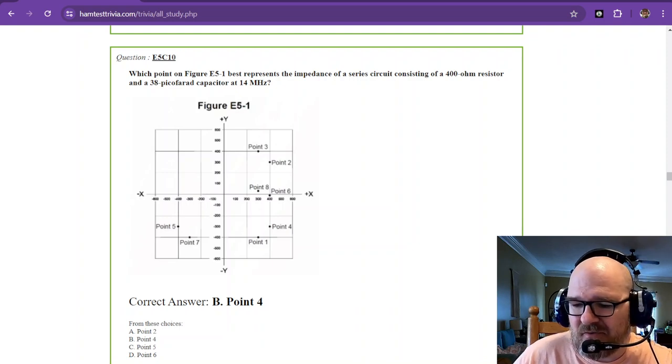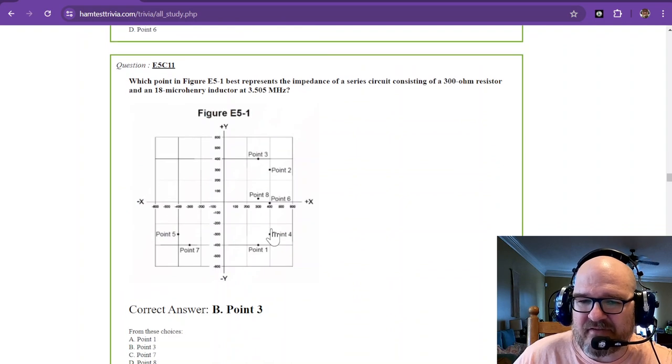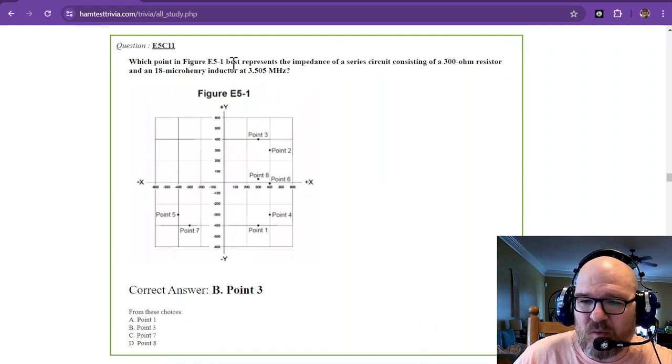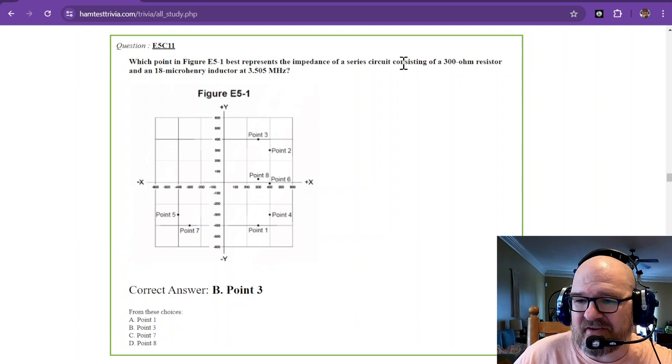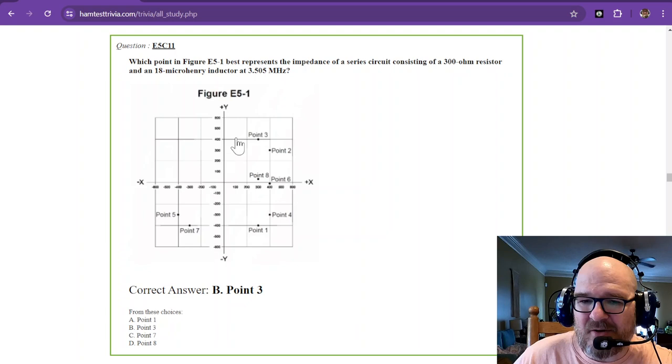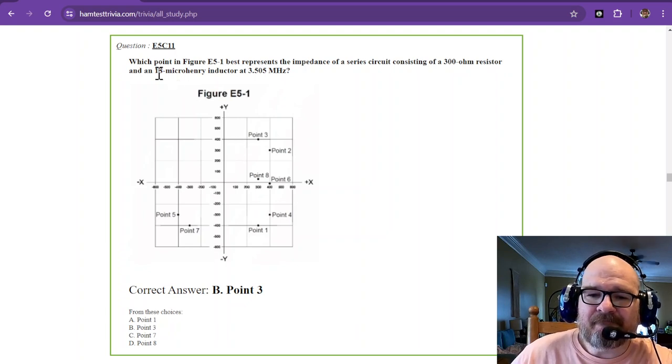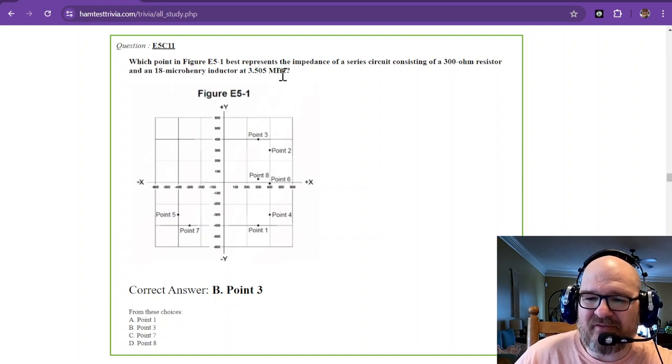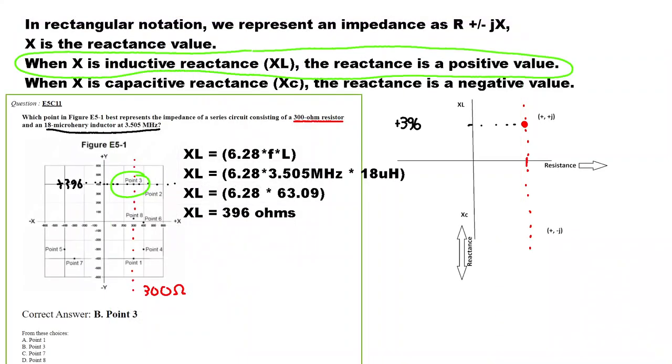All righty. Let's go to number 11. I'm going to read it first. Then I'll put the answer solution on the screen. Which point in figure E5-1 best represents the impedance of a series circuit consisting of a 300 ohm resistor? So 300 ohms is going to give us 0.3, 0.8, and 0.1. So you've already, you can't pick C on this one. So we know it's going to be through those points. But we need to find the inductive reactance of this 18 microhenry inductor at 3.505 megahertz.